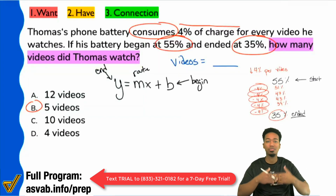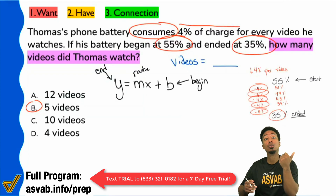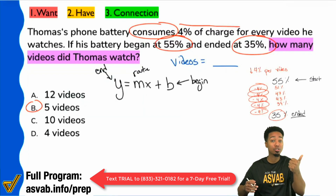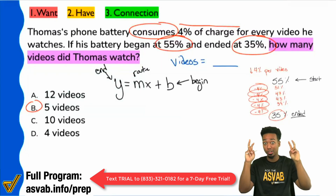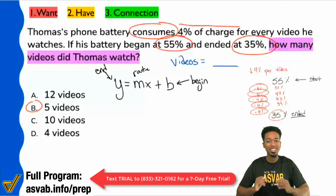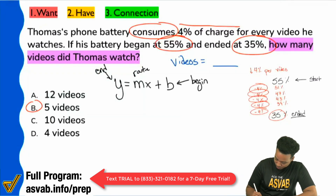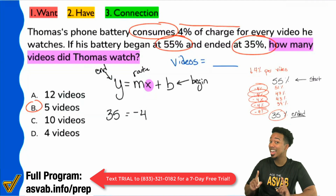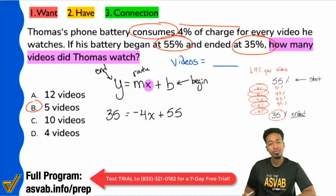Typically x is going to be time — five minutes, ten minutes, fifty minutes — or in this case, since the rate is percent per video, that means x is the number of videos. Remember that your rate, your slope, your rise over run, is going to be your y over your x. So percent per video means x is the videos. I know what I have at the end: a battery charge of 35%. I'm losing 4% per video, so that's minus 4 — your rate is negative because you're going down 4% per video. And we started at 55%. So we set up the equation and solve it, and we are done.